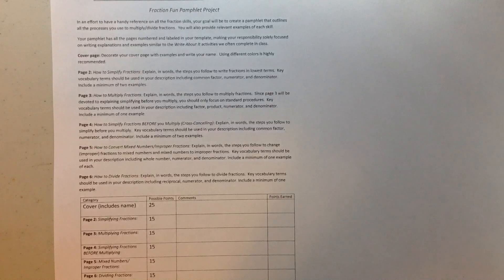Now you'll notice in page one of the project, it lets you know that, or I'm sorry, page one would be the cover. Page two, and it gets a little confusing here, but the second page would be how to simplify fractions. And so you are explaining in words the steps you follow to write fractions in lowest terms. Key vocabulary is expected to be used in your description, including common factor, numerator, and denominator. And you must have at least two examples.